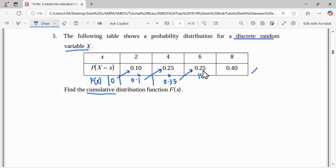So 0.35 added with 0.25 gives 0.6. So we add up here, and it gives us lastly 1.